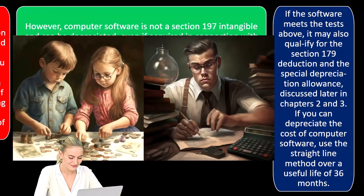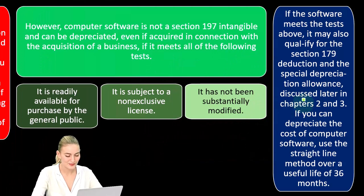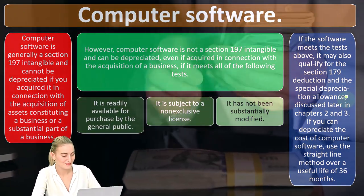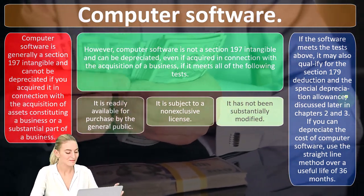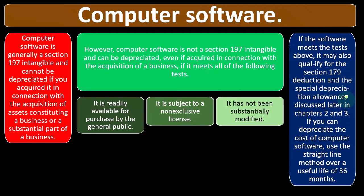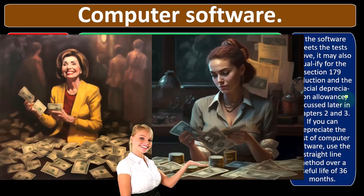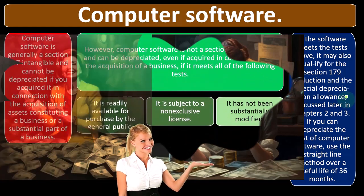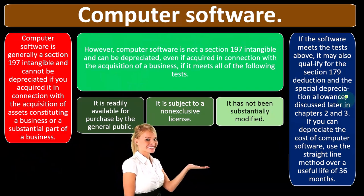As a general rule, we think about straight line as our baseline calculation from a conceptual standpoint — meaning we're going to take the cost and allocate it over the useful life, showing the cost being consumed as an expense in the period that it helped to generate revenue. Then we deviate from that, either for bookkeeping reasons like an accelerated method, because we get more use from a forklift in the first year than the last year.